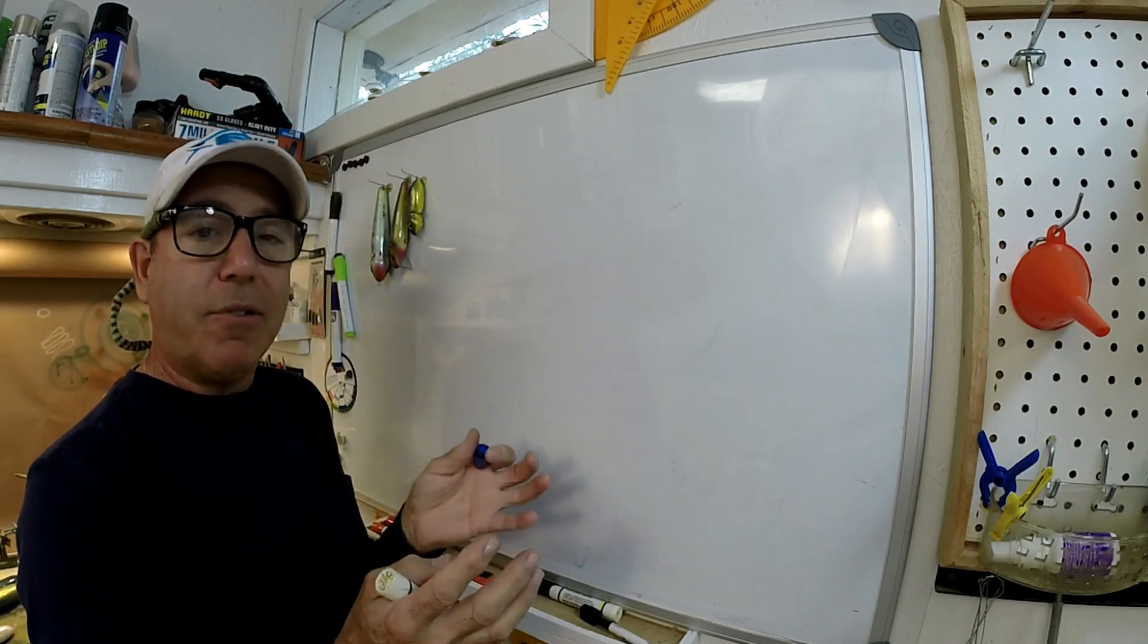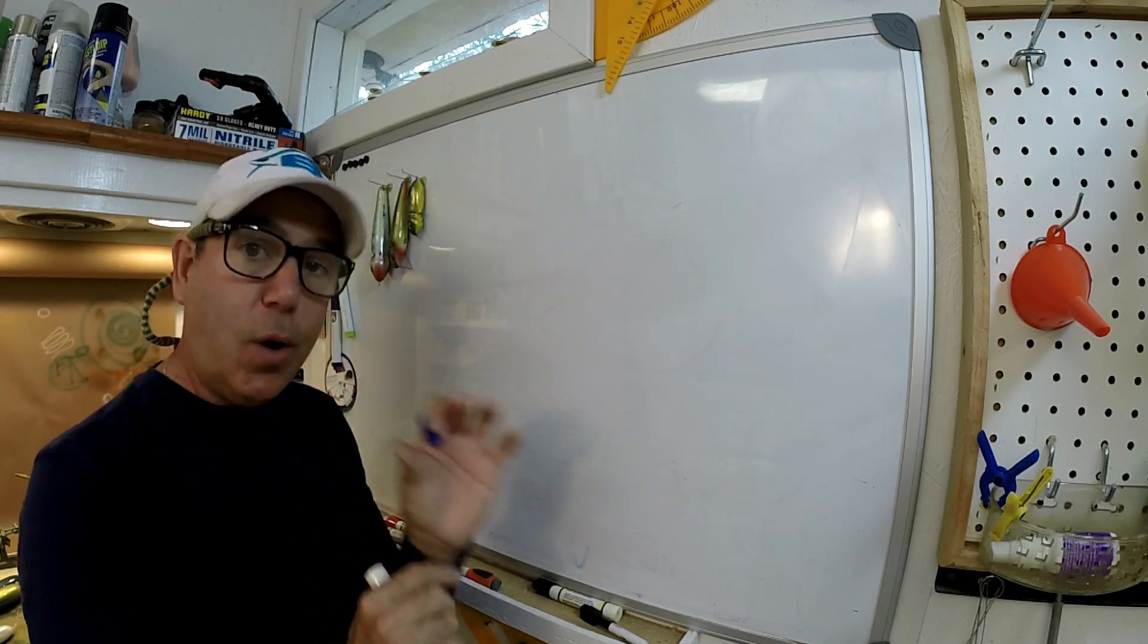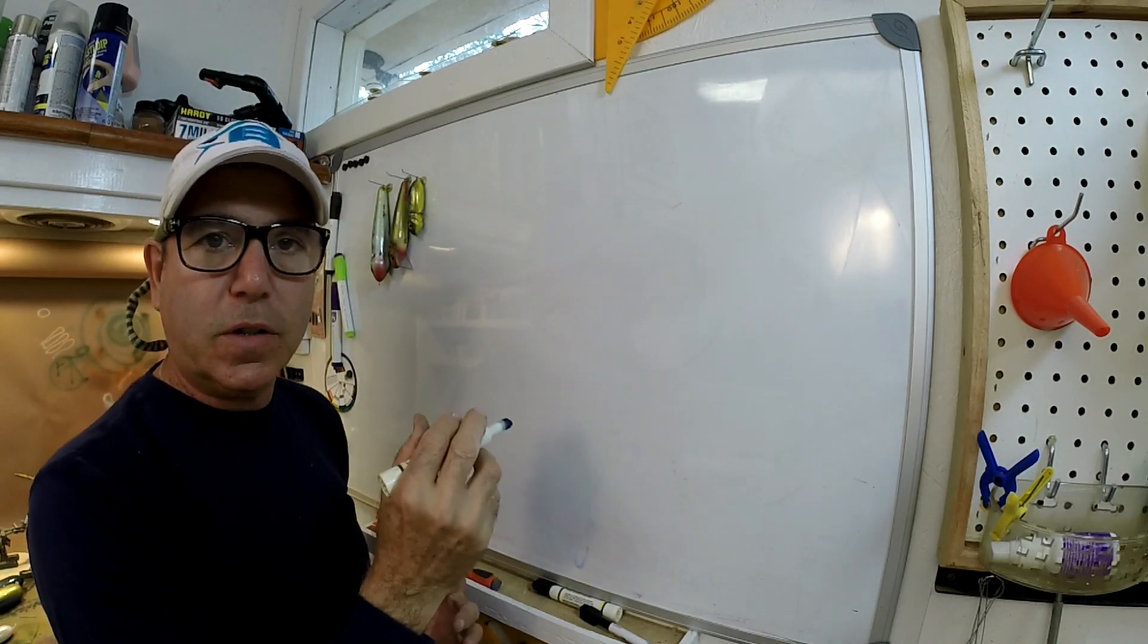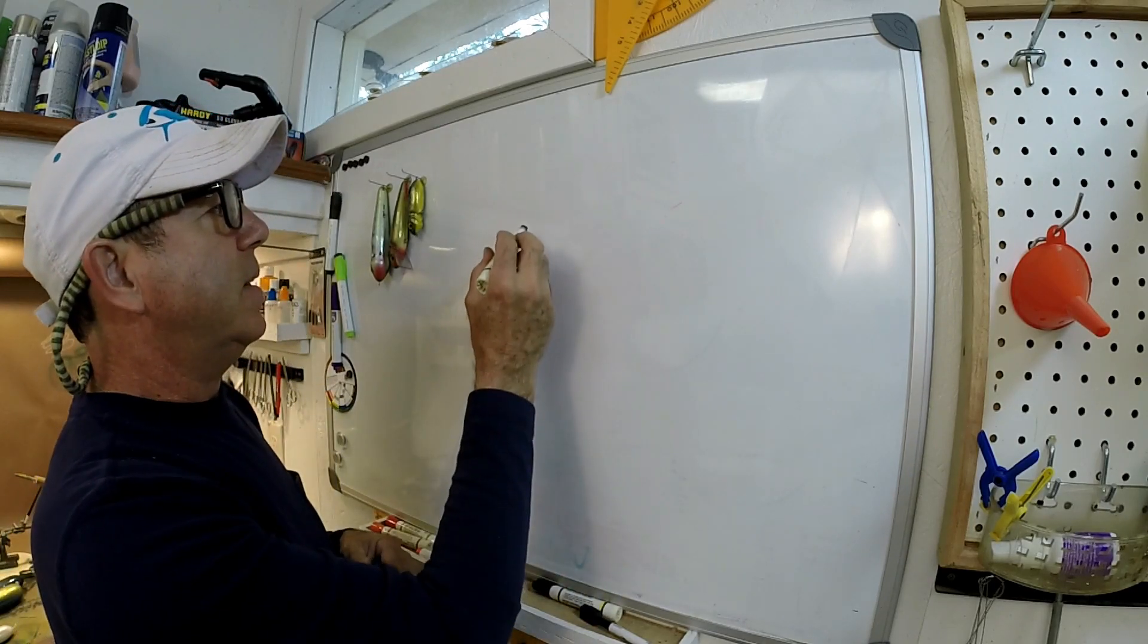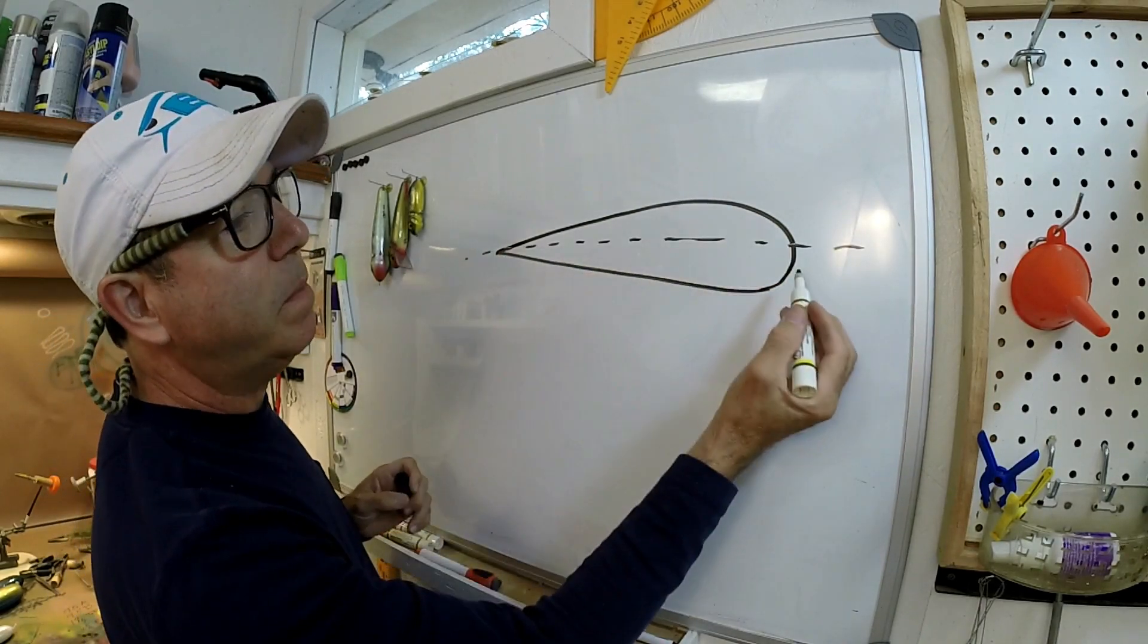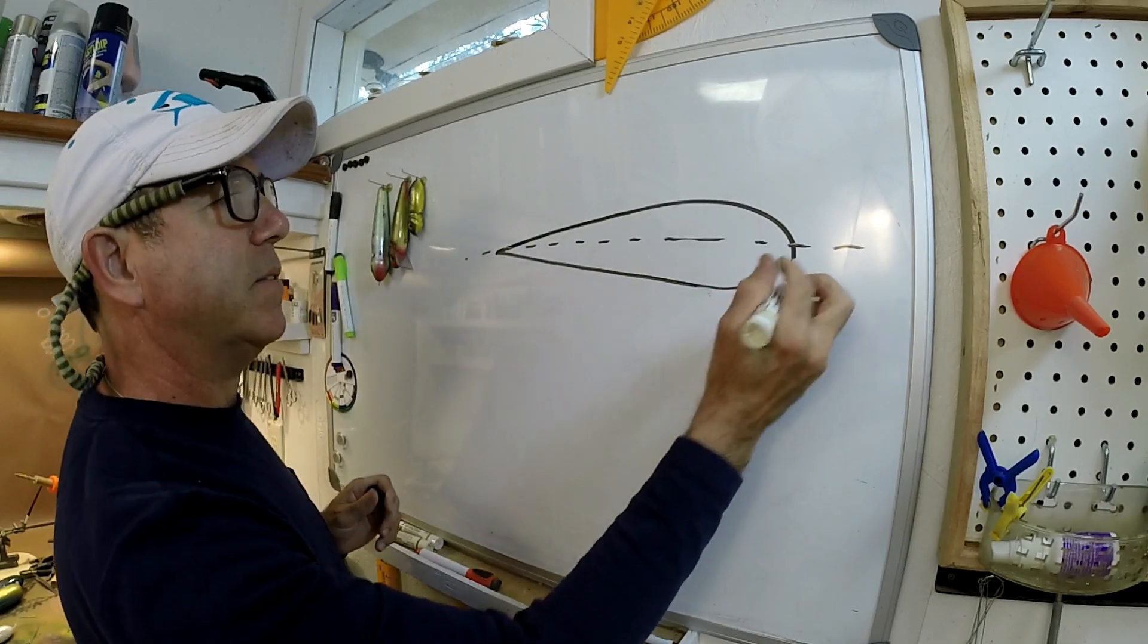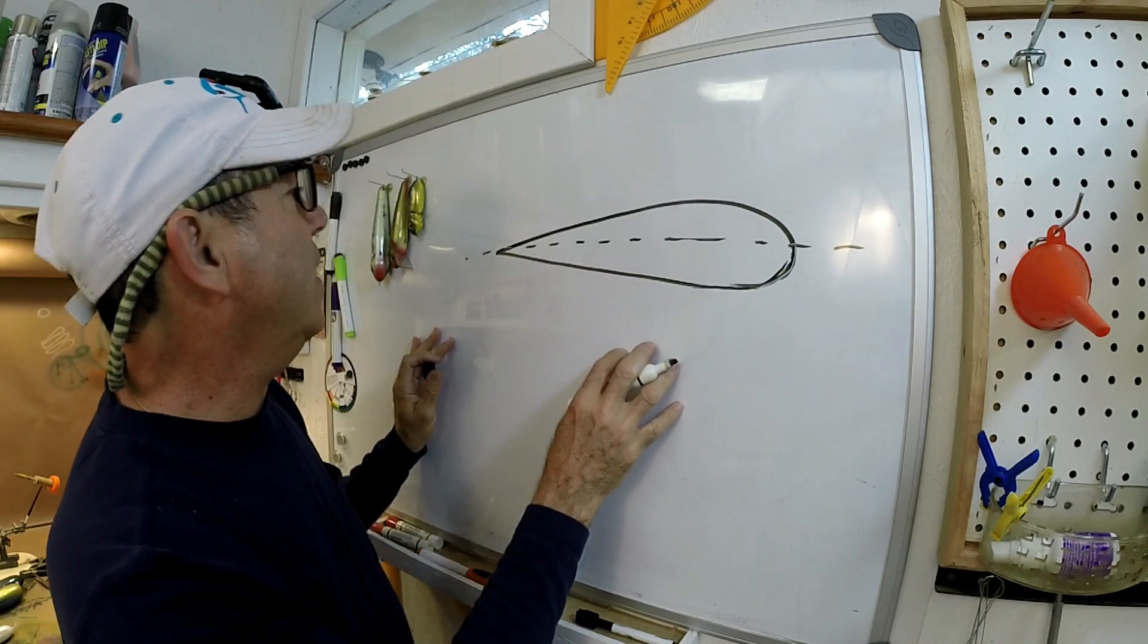The shape with the least or the lowest coefficient of drag is what some folks call a teardrop or an airstream or a streamline. It has a pointy end going to a blunt end and it would be symmetric about that center line. I didn't exactly draw it symmetric, but let's try to get a little more symmetric.